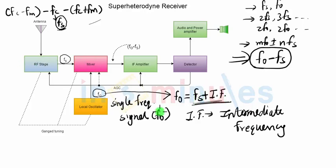Now, as you go from one station to another station, your carrier frequency will change and your Fs will change, and hence Fs plus IF, the value of local oscillator frequency, should also change.